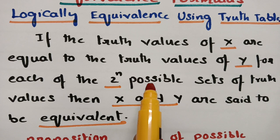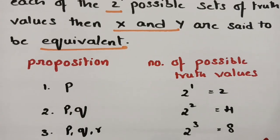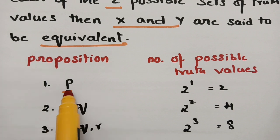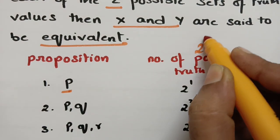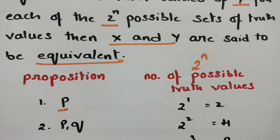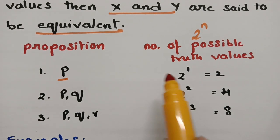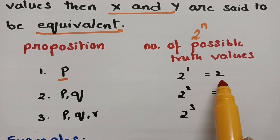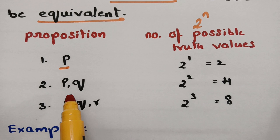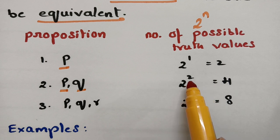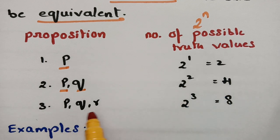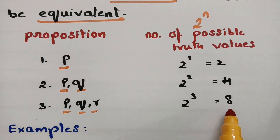What are these 2^n possible sets? If there is only one proposition p, the number of possible truth values will be 2^1, which equals 2. If there are two propositions p and q, the number of possible truth values will be 2^2, which equals 4. If there are three propositions p, q, and r, the possible truth values are 2^3, which is 8.